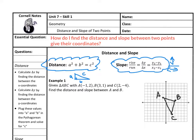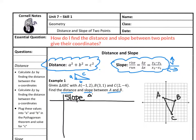For example one, I've already plotted my points and the directions say to calculate the distance and slope between points A and B. For all these problems, we're going to set up a little T-chart. We're going to do slope first, which is your change in y over change in x. The second column will be distance, and we always use a squared plus b squared equals c squared. The side we're finding is side A, B.